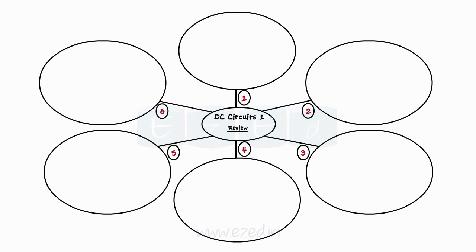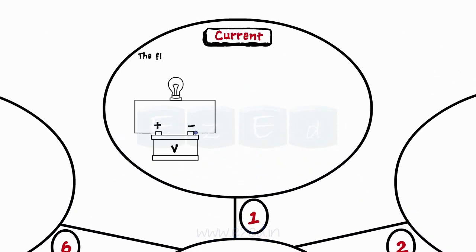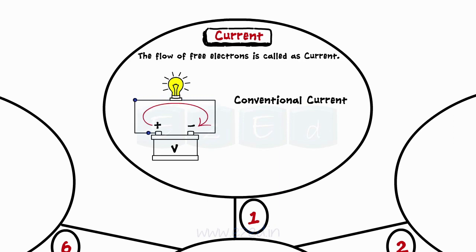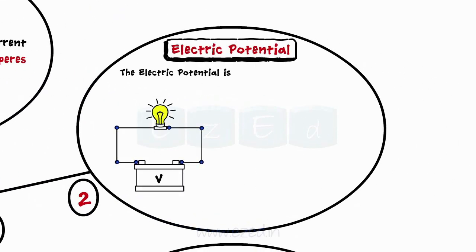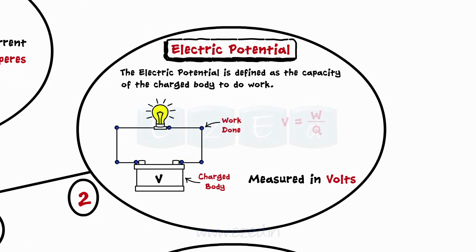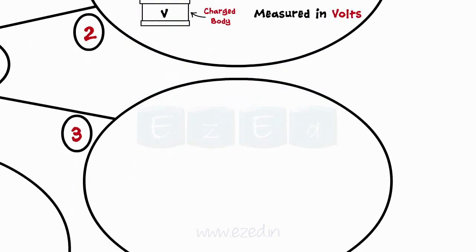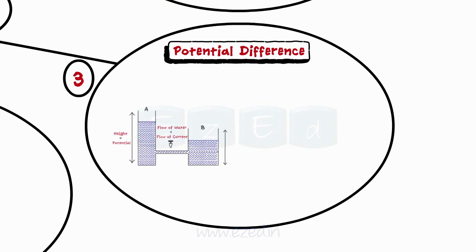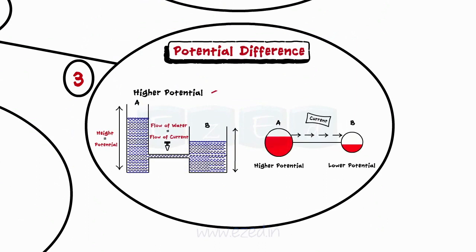Let's summarize this now. In a DC circuit, the flow of free electrons is called as current. We consider only the conventional current that flows from the positive to the negative terminal of a battery. It is measured in amperes. The electric potential is defined as the capacity of the charged body to do the work. Its unit is volt and formula is V equals W upon Q. The difference between the two potentials is called potential difference. Current always flows from higher potential to lower potential.